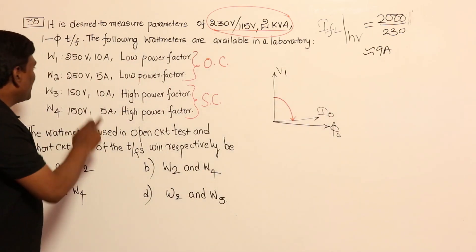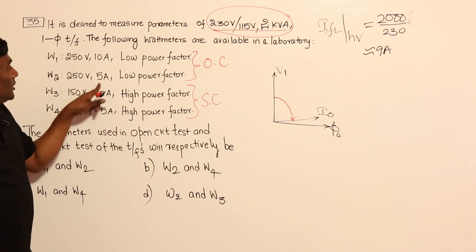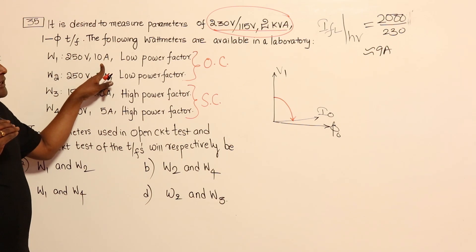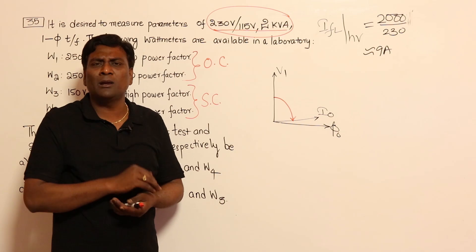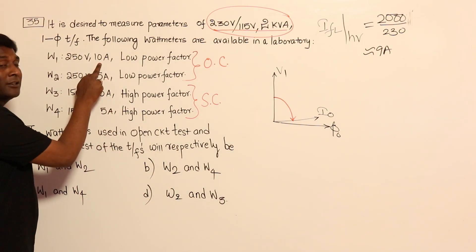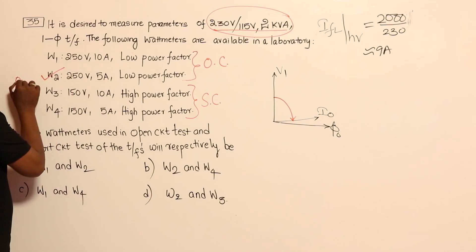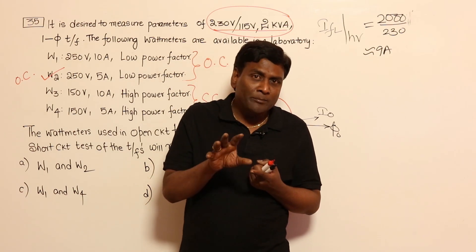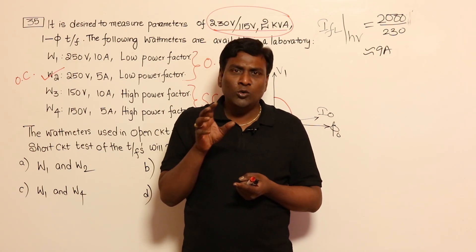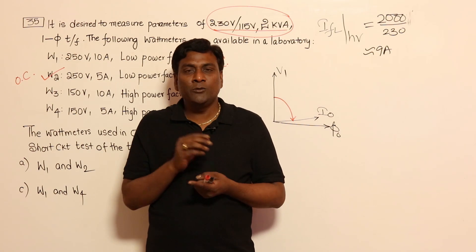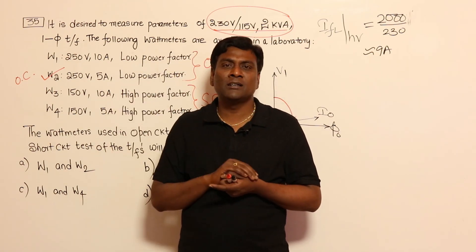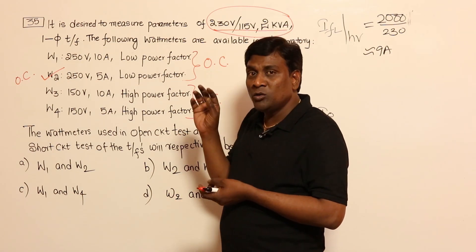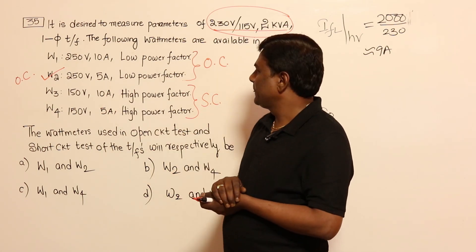On the HV side, full load current is 9 amperes. Should we select W1 or W2? W2, because full load current is roughly 9 amperes. But in the OC test, the no-load current is 2 to 10 percent of full load current — say 10 percent of 9 amperes gives roughly 0.9 or 1 ampere. Now, 1 ampere is nearer to the lower-range wattmeter. To measure 1 ampere, a 0–5 ampere meter gives less error than a 0–10 ampere meter. So we select the wattmeter with the 5A range, as 5A is nearer to 1A.